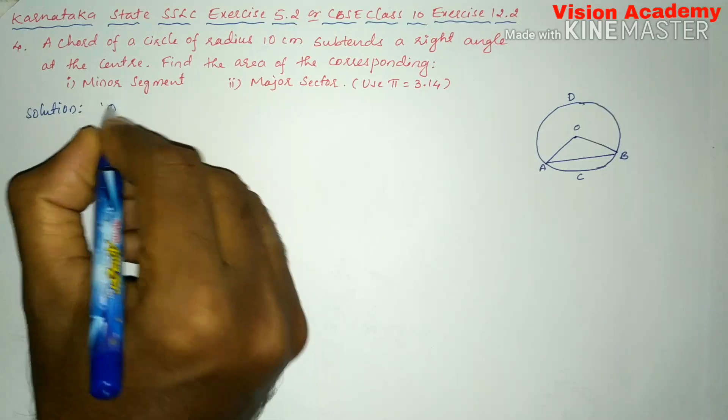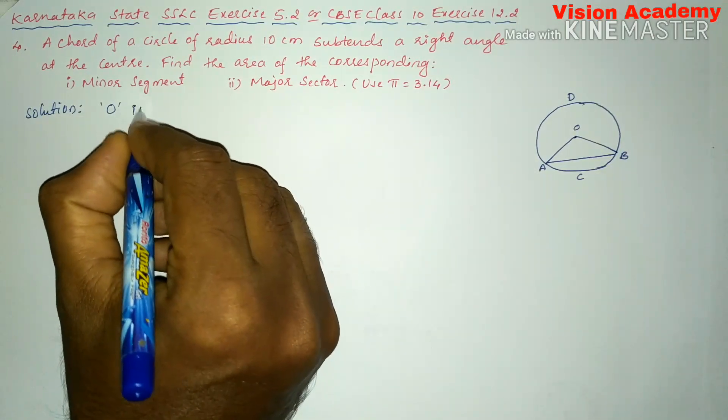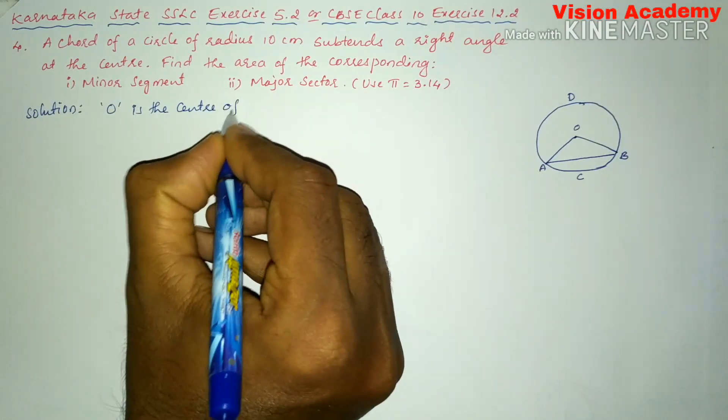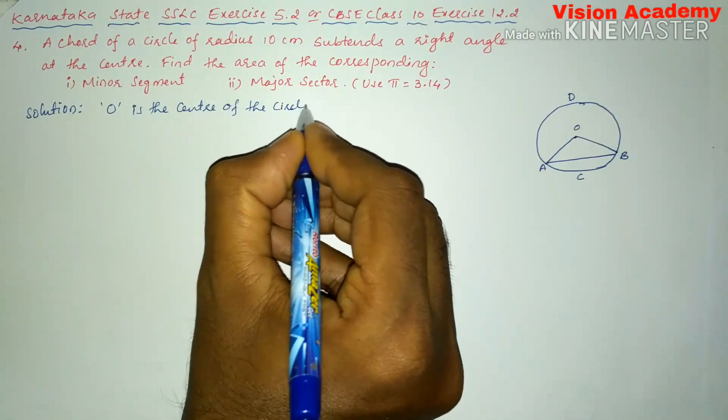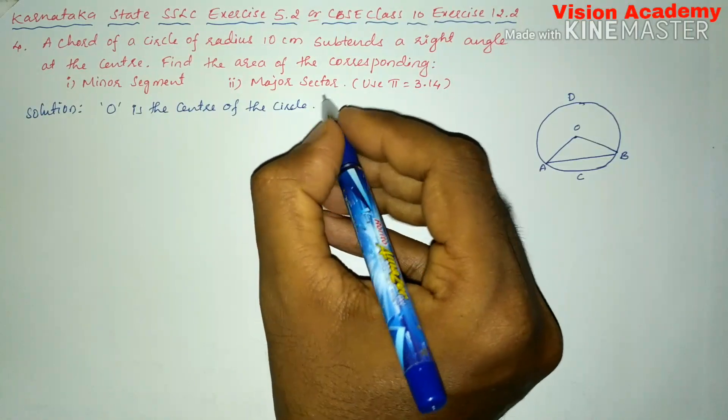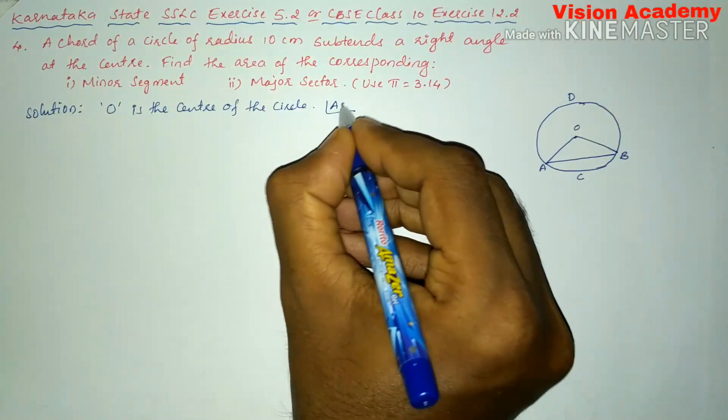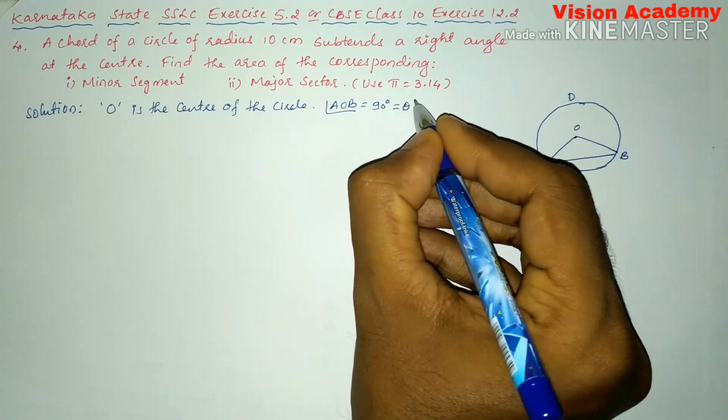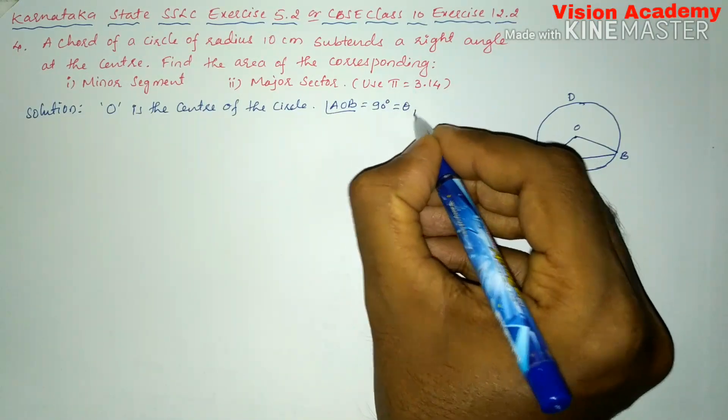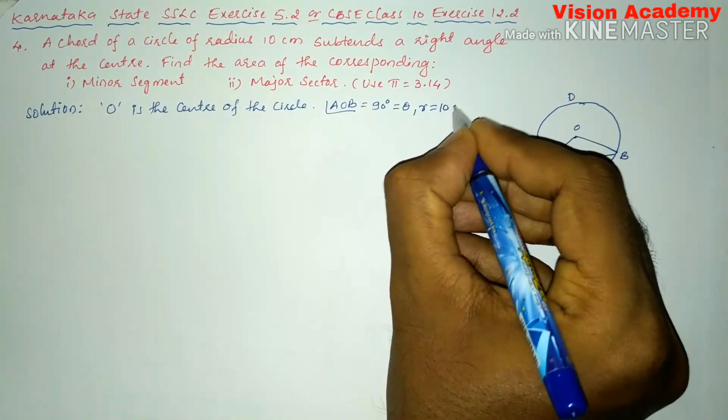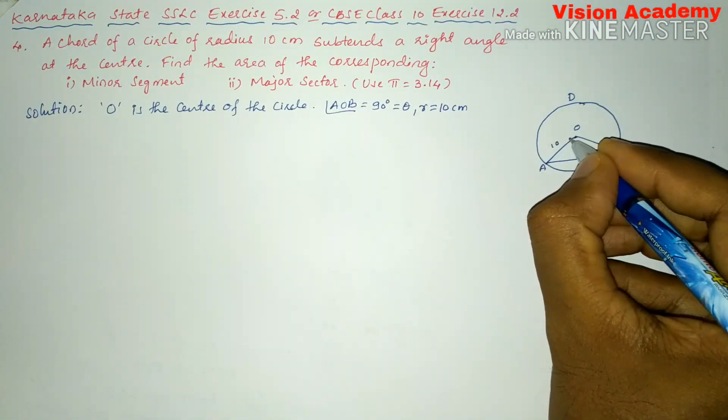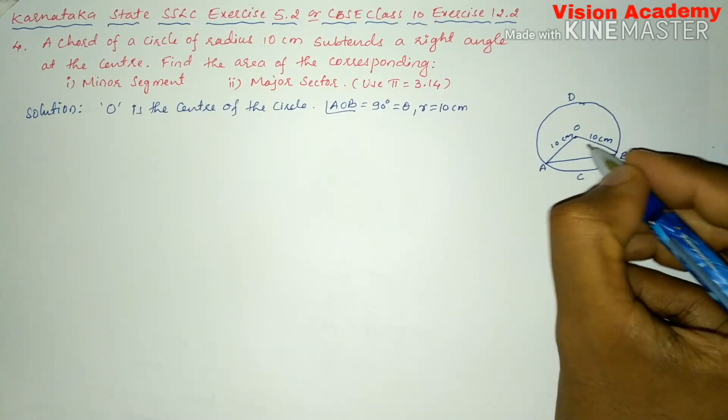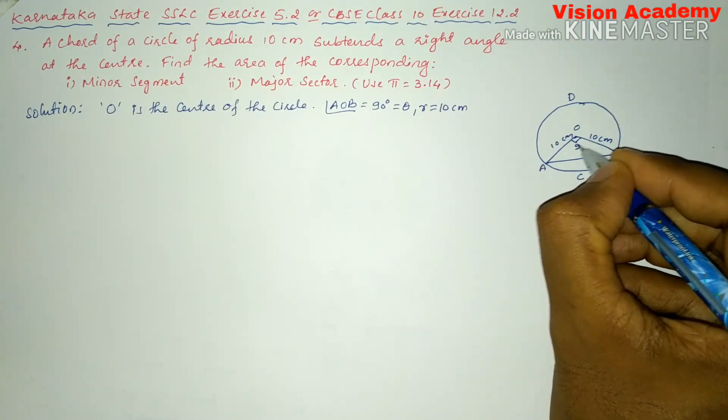Here we'll write O is the center of the circle. Angle AOB is equal to 90 degrees which is equal to theta. Now R is equal to 10 centimeter. Here this is 10 centimeter and this is also 10 centimeter. Here this angle is 90 degrees.